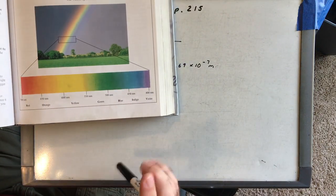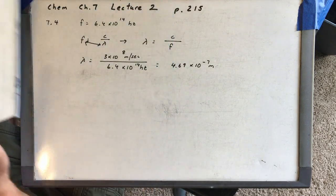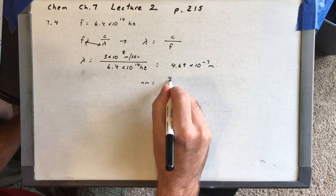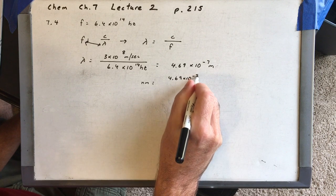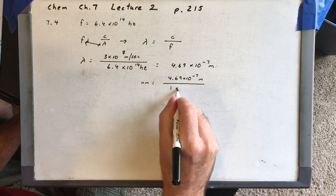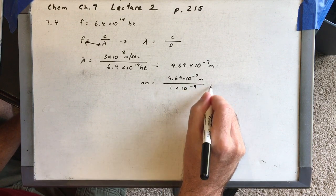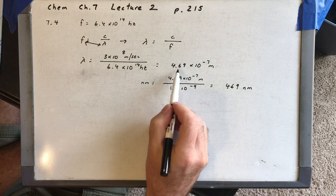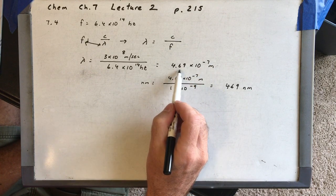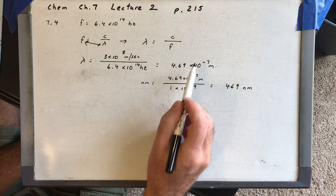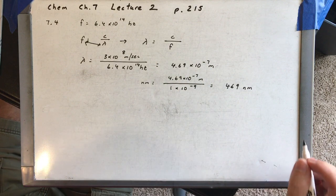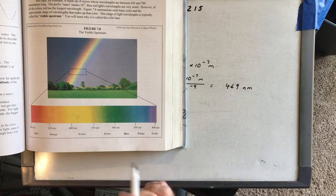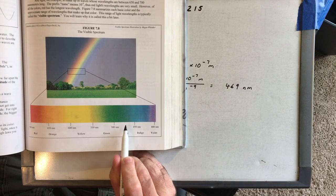If you look at the chart we have to change that into nanometers. The way that you change that to nanometers is you divide by 1 times 10 to the minus 9, and you'll get 469 nanometers. Just move the decimal point to the right two spots and get rid of the 10 times 10 to the minus 7, and that tells you how many nanometers. So let's look on the chart — what color is 469? That's right in the blue range.